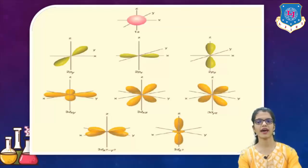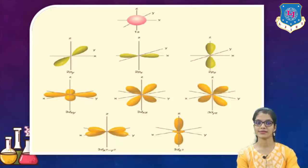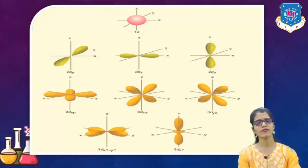After that, we have P orbitals. We can divide them into three different parts. Now the maximum number of electrons which are possible into this is 6. As three different types are there, 2 is the maximum capacity of a single orbital. The maximum capacity of all those is 6.